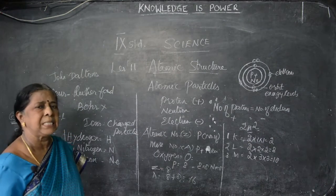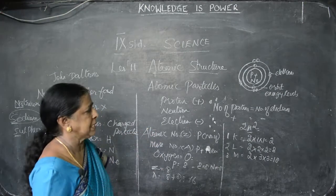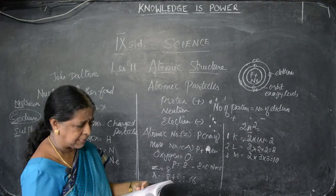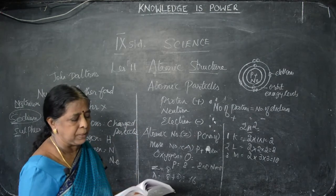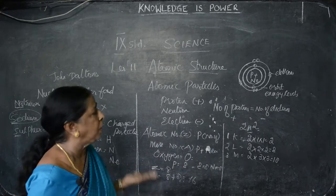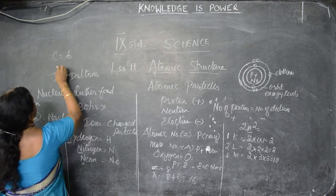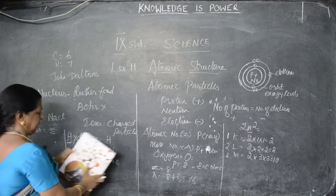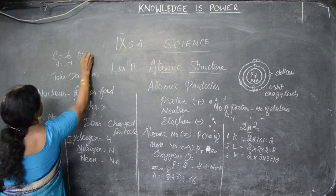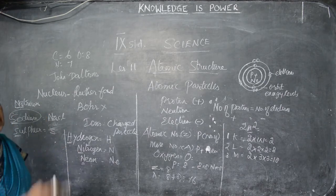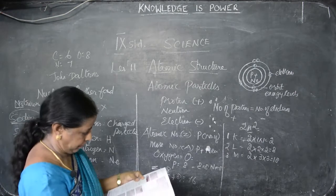Along with the symbols, we write the number — that is valency. Valency means the number of electrons present in the last orbit, which is known as the valence. Those electrons are valence electrons. Some examples are given for us: we have to find out how many electrons are in each orbit. For carbon, the atomic number is 6; nitrogen's atomic number is 7 — given in your book at page number 191/128. Oxygen's atomic number is 8. By seeing the atomic number we can find protons and electrons; by finding the mass number we can also find neutrons.